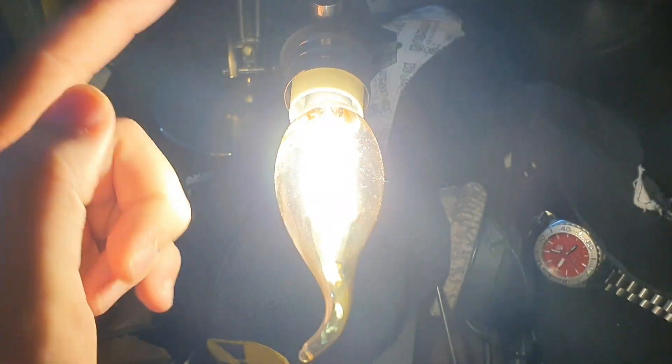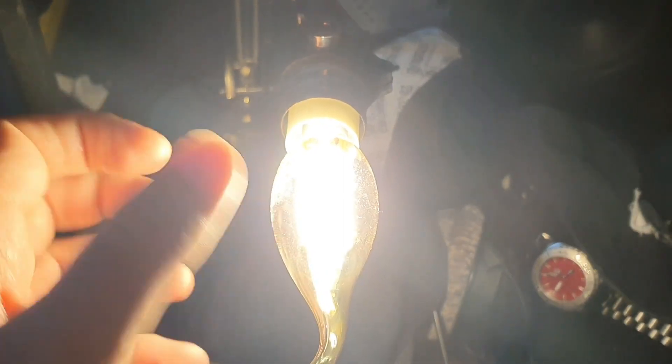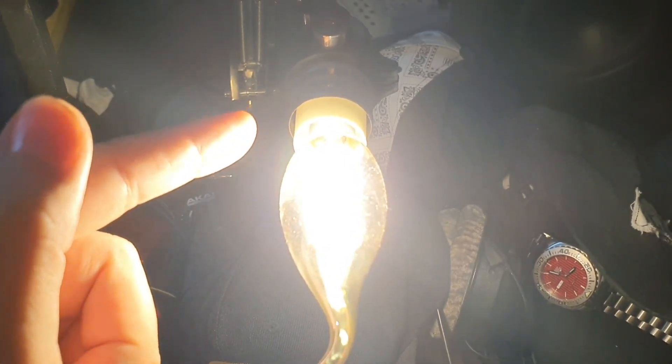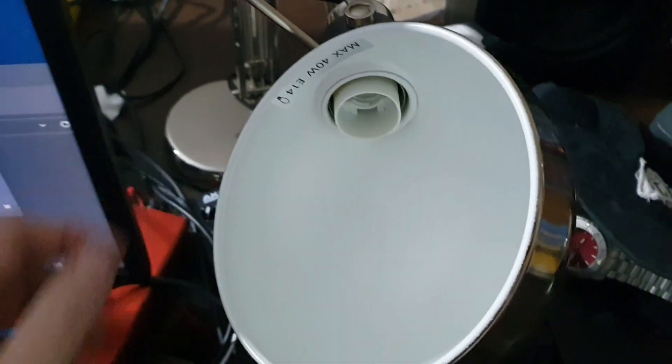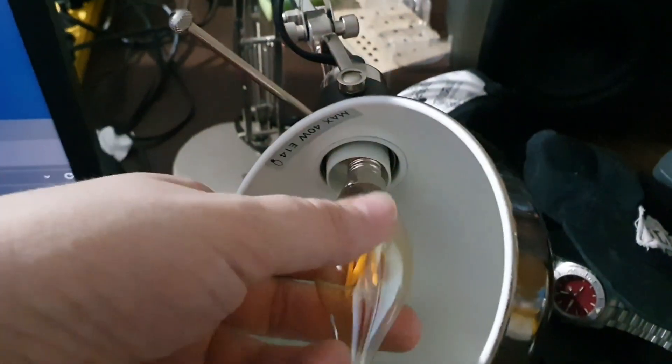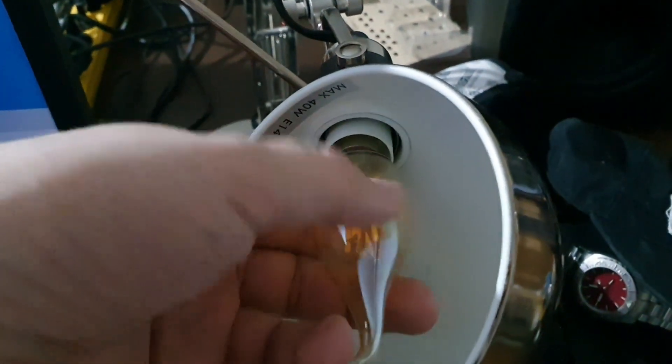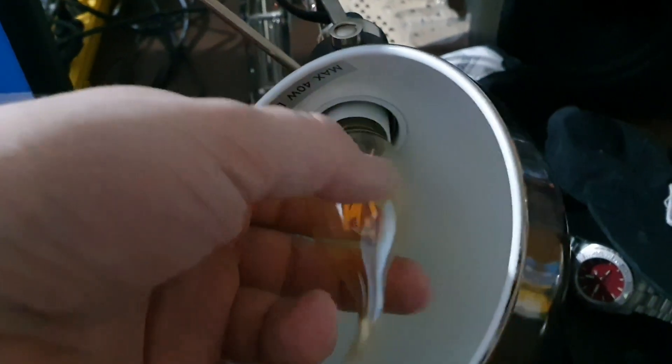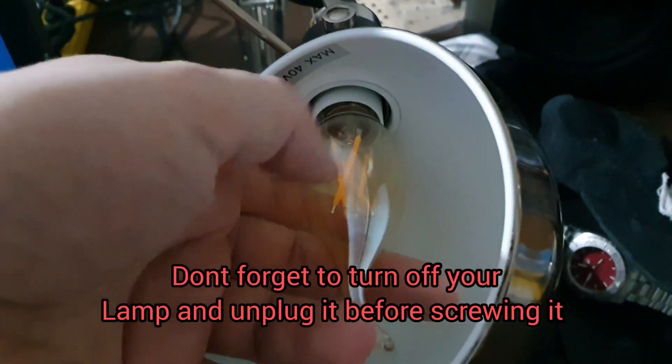It's a simple process, but don't forget to turn it off before you screw it into the lamp. For example, I do this on my IKEA lamp. I put the bulb here and turn it clockwise into position. It's very easy, as you can see.